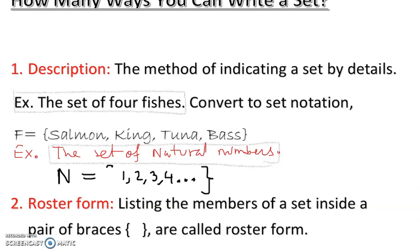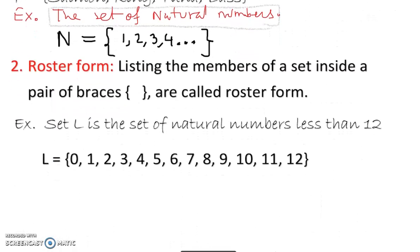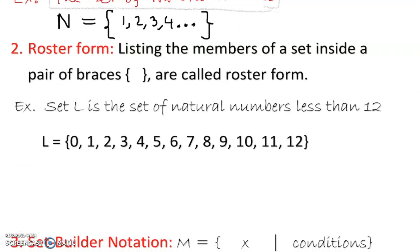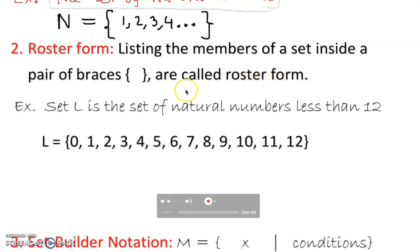Clearly this is a set notation we call it roster. Roster form means listing the members of a set inside a pair of braces. If you've seen the last video, you have a clear idea about roster form — anything that has open braces and closed braces is basically roster form, and this is the most useful set notation.